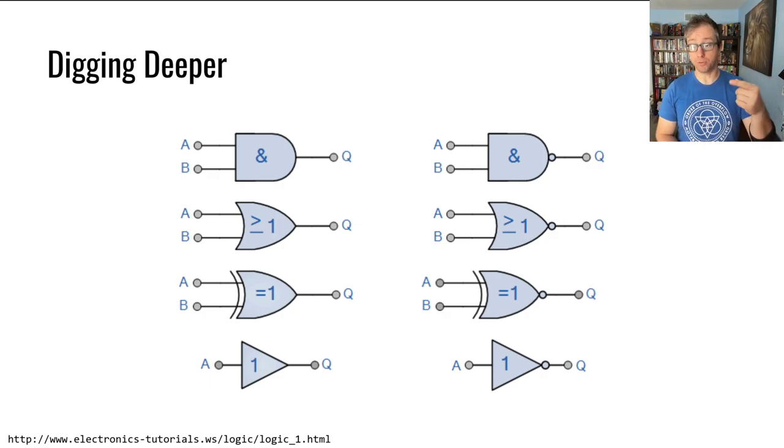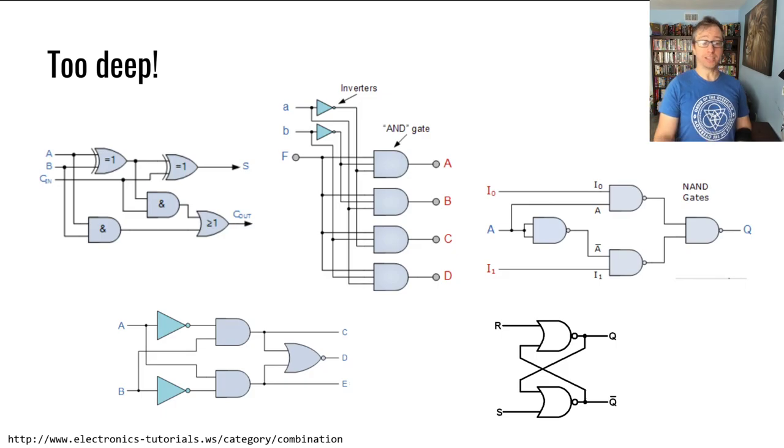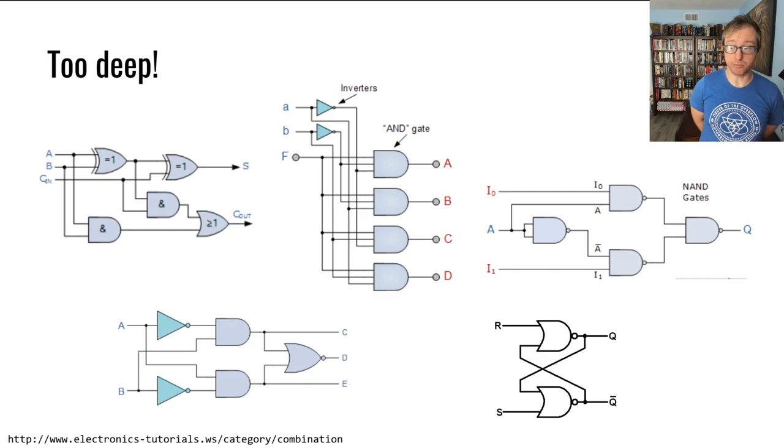This is a trivially simple concept. If you take discrete mathematics you've probably created truth tables around this. The interesting thing is by combining these gates in clever ways, we can start taking small steps to a computer. This slide has a bunch of different combinations of gates.